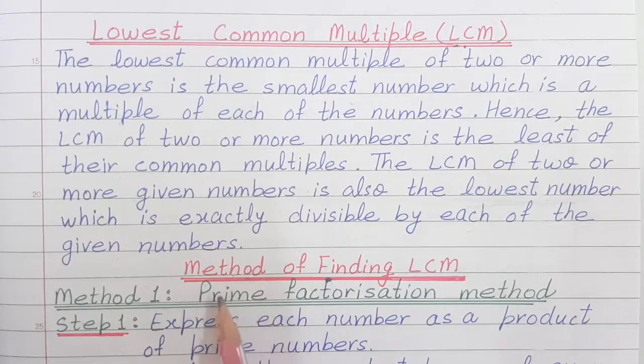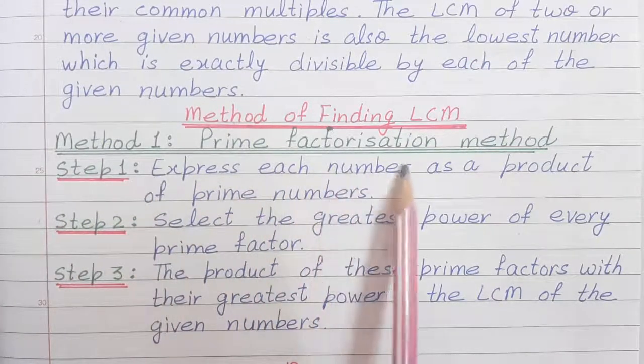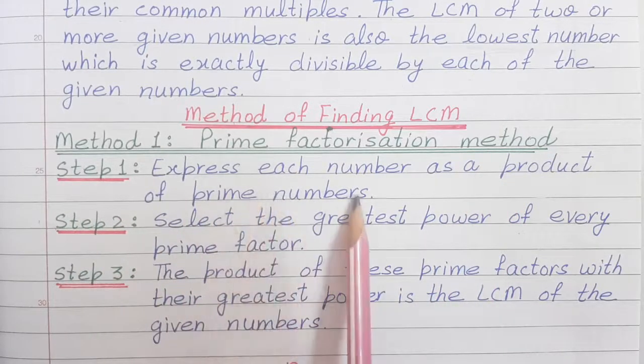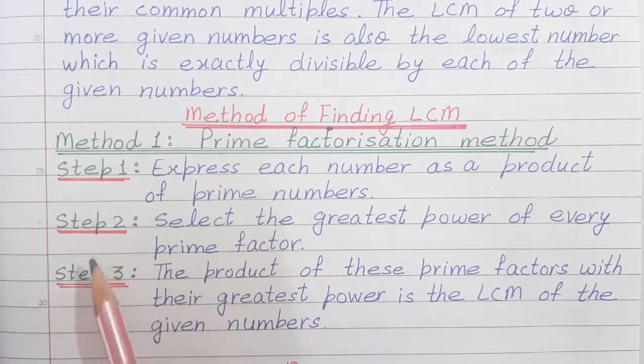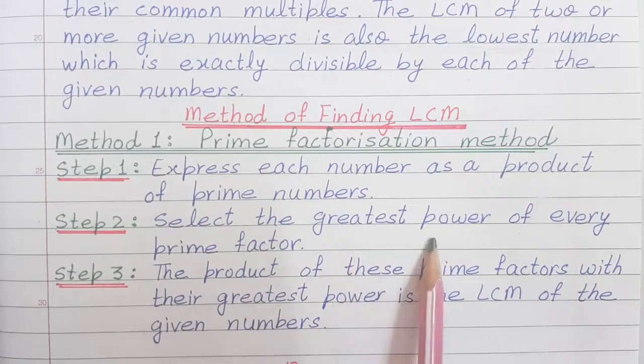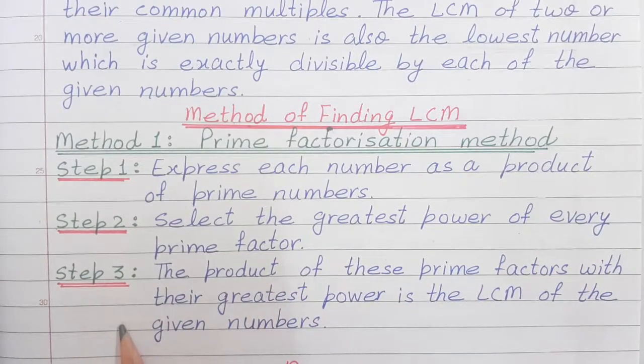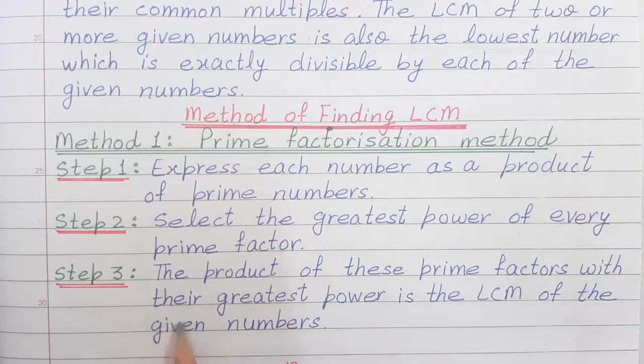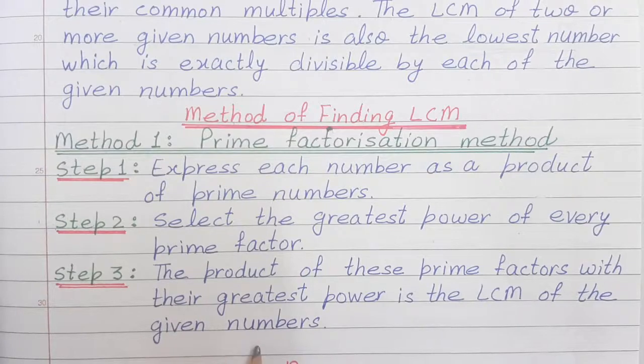Now, let us discuss the method of finding LCM. The first method is Prime Factorization Method. Step 1: Express each number as a product of prime numbers. Step 2: Select the greatest power of every prime factor. And step 3: The product of these prime factors with their greatest power is the LCM of the given numbers.